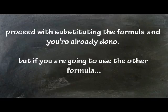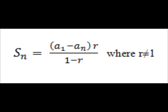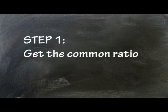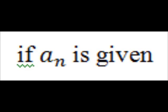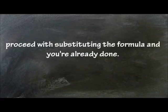If we're going to use the other formula, which is S sub n equals a sub 1 minus a sub n times r, all over 1 minus r, where r is not equal to 1 — Step 1: Get the common ratio using r equals a sub 2 over a sub 1. A sub n is already given, so what you only have to do is proceed with substituting the formula, and you're already done.